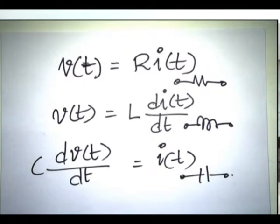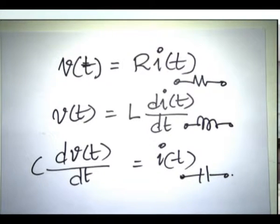All three elements relate voltage and current either proportionally or through a derivative. The derivative of a sine wave of a certain frequency also results in a sine wave of the same frequency. When you add two sine waves of the same frequency, you get a sine wave of the same frequency. So when you apply Kirchhoff's current law or voltage law — adding currents or voltages — if each is a sinusoid of the same frequency, the resultant is also a sinusoid of the same frequency. This is why, if you construct a circuit of resistances, inductances, and capacitances and excite it with a sinusoidal source, the result is sinusoidal everywhere in the circuit.